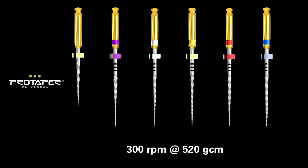ProTaper runs at 300 RPMs and 520 gram-centimeters. Peer-reviewed journals show that progressively tapered files should be run at high torque. It is dangerous to change the torque from one ProTaper instrument to the next — if you want to increase your breakage, change your torque. Maximum torque for all ProTaper files ensures maximum safety.